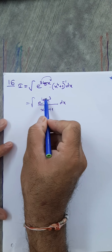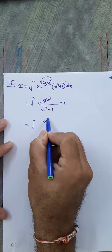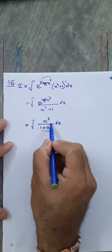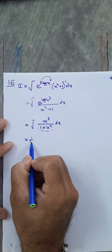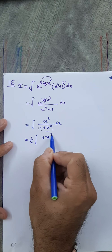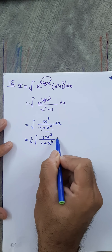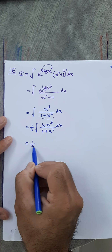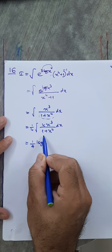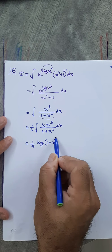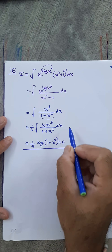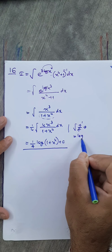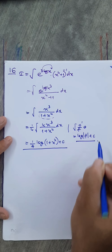Now e raised to log x cube simplifies to x cube, so we have x cube upon 1 plus x raised to 4. The derivative of the denominator is 4x cube, so multiplying and dividing by 4, this is of the form f' upon f. Using the formula integral of f'/f equals log|f| plus c, the answer is (1/4) log|1 + x⁴| plus c.